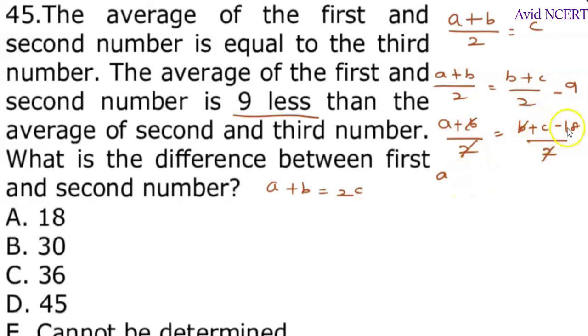C equals 18 comes on this side becomes A plus 18, which equals C. You can substitute the value of C as this, which is A plus B equals 2 times A plus 18, which equals A plus B equals 2A plus 36.